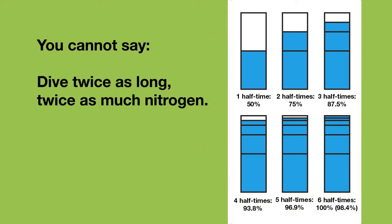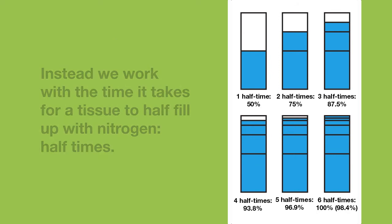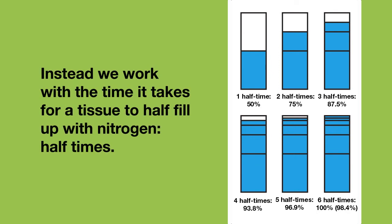This means you need a trick to be able to calculate with this. Because you can't say twice as long diving gives twice as much nitrogen, three times as long diving gives three times as much nitrogen, etc. The trick is to work with the time it takes for a tissue to half fill up with nitrogen — half times.